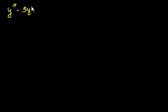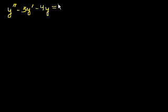Let's do some more non-homogeneous equations. We'll take the same problem as we did in the last video, but we'll change the right-hand side. The second derivative of y minus 3 times the first derivative of y minus 4 times the function — previously the non-homogeneous part was 3e to the 2x, but now let's make it a trigonometric function: 2 sine of x.